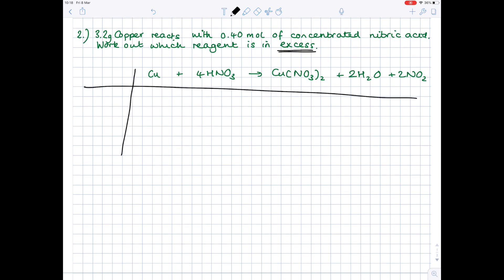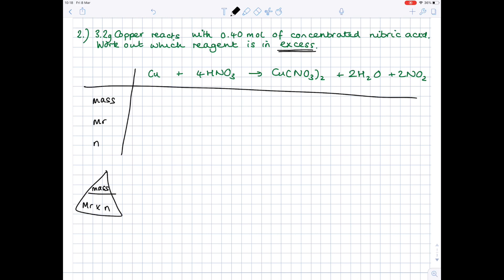So let's start by doing our table. We know from the question we have 3.2 grams of copper. In terms of the nitric acid, they've told us that we have 0.4 moles of nitric acid. Looking for the MR of copper using your periodic table, you'll see that it's 63.546. Using our formula triangle, we're going to work out the number of moles of copper by doing 3.2 divided by 63.546. That gives us the number of moles of 0.05035.